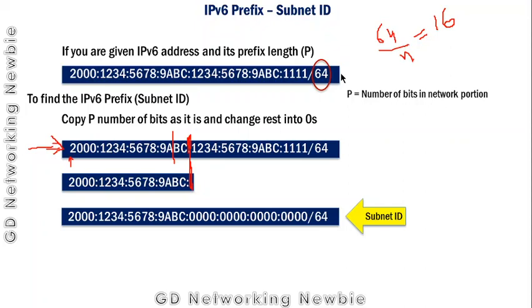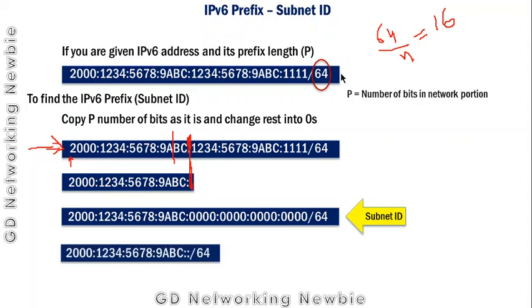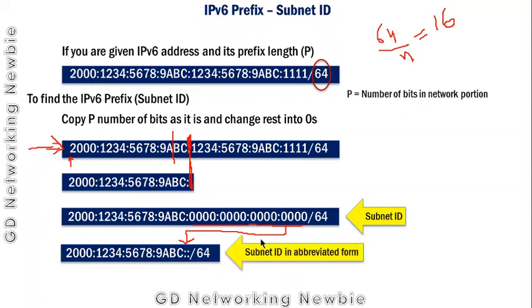We can also abbreviate it. We have a group of zeros, and that consecutive group of zeros can be replaced by a double-colon sign, as per the basic rules of IPv6 addressing from our previous video. This gives us the subnet ID in abbreviated form. The simple rule is: copy p number of bits and change the rest to 0, and you will have the subnet ID.